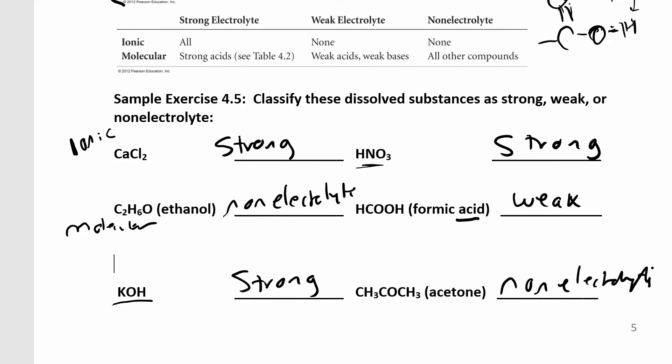So this was a strong electrolyte because it's a soluble ionic compound. This is a strong electrolyte because it's a strong acid. This is a non-electrolyte because it's a molecular compound. That is not, right here, molecular compound. It's not a weak acid, a weak base, or a strong acid.